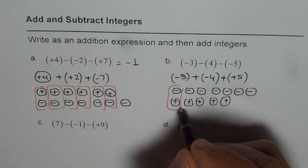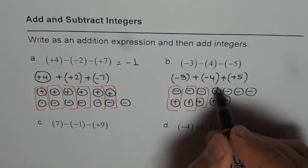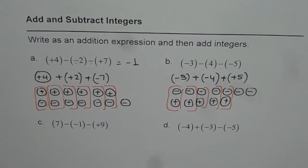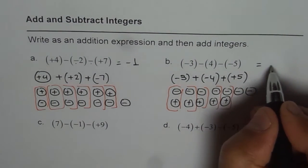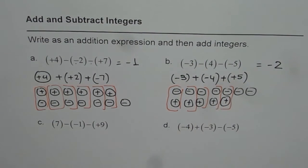So plus and minus becomes zero. These are the zeros. You are left with two negative. So what is the answer? It is negative two. That is how you can add and subtract integers.